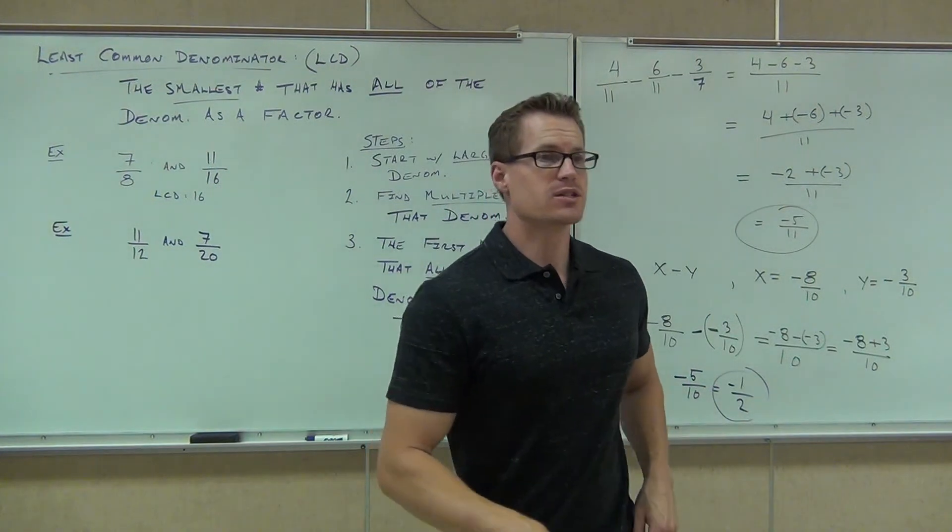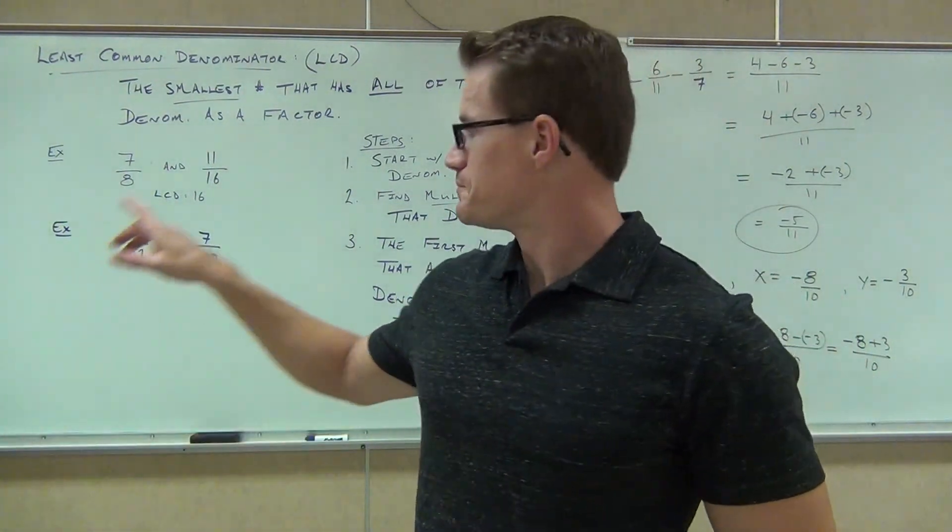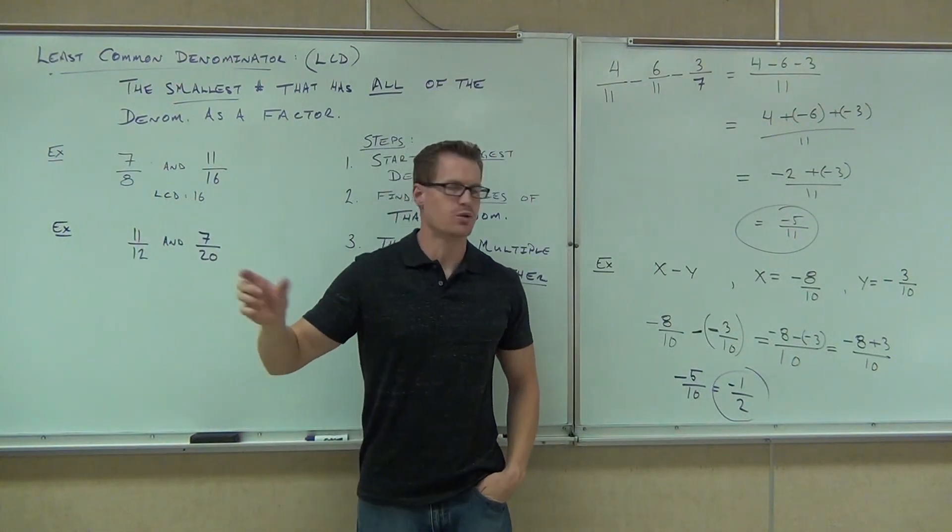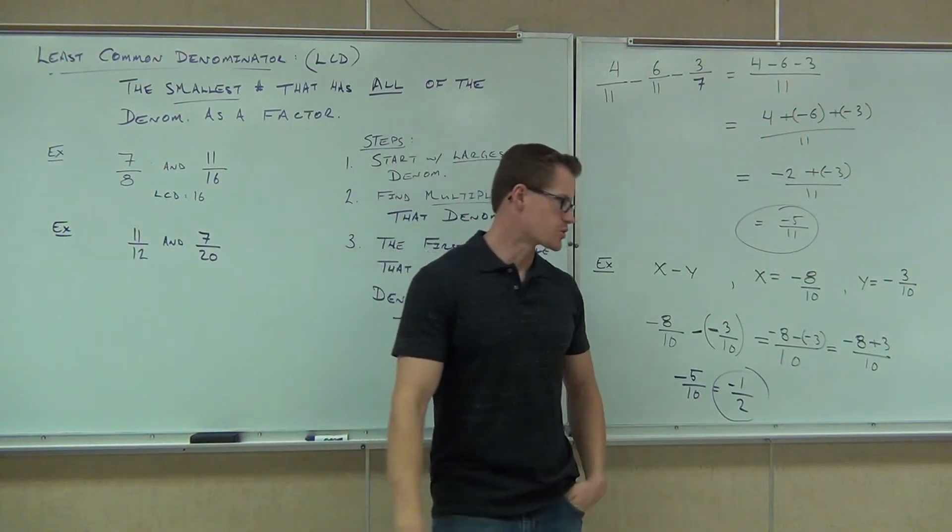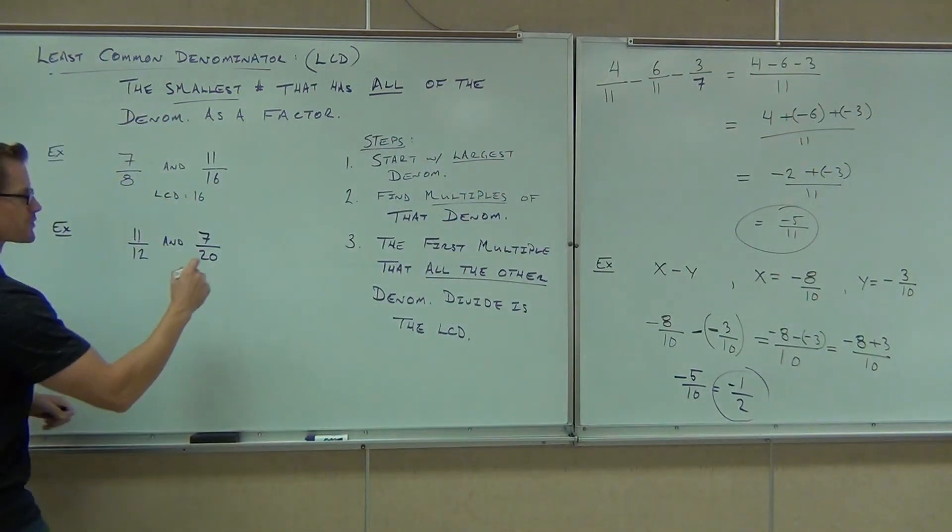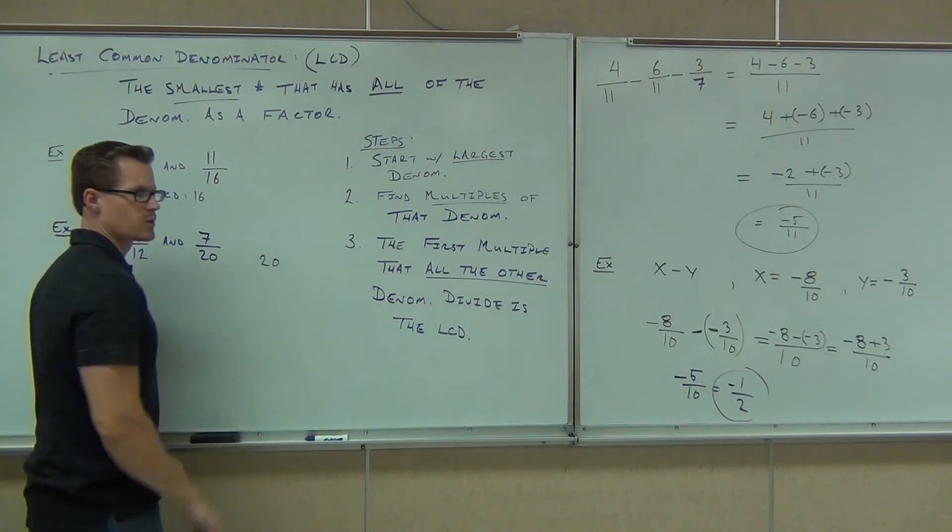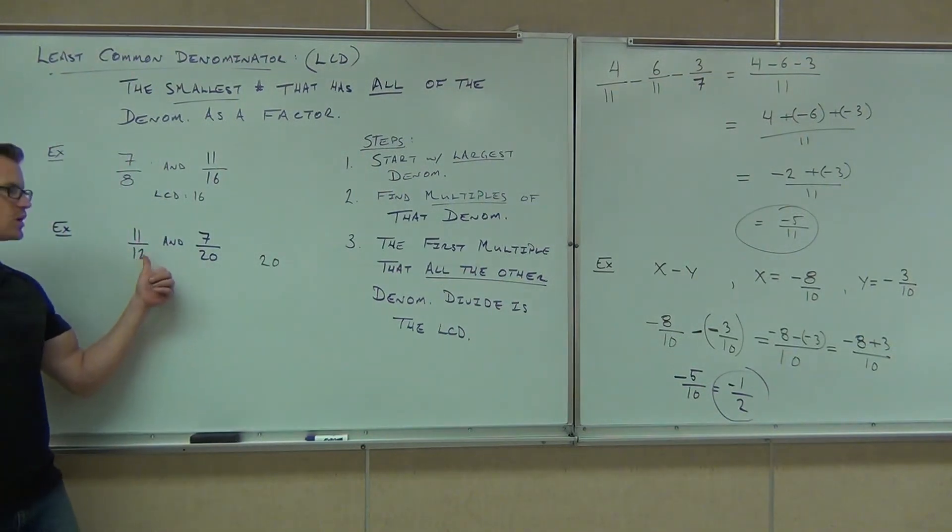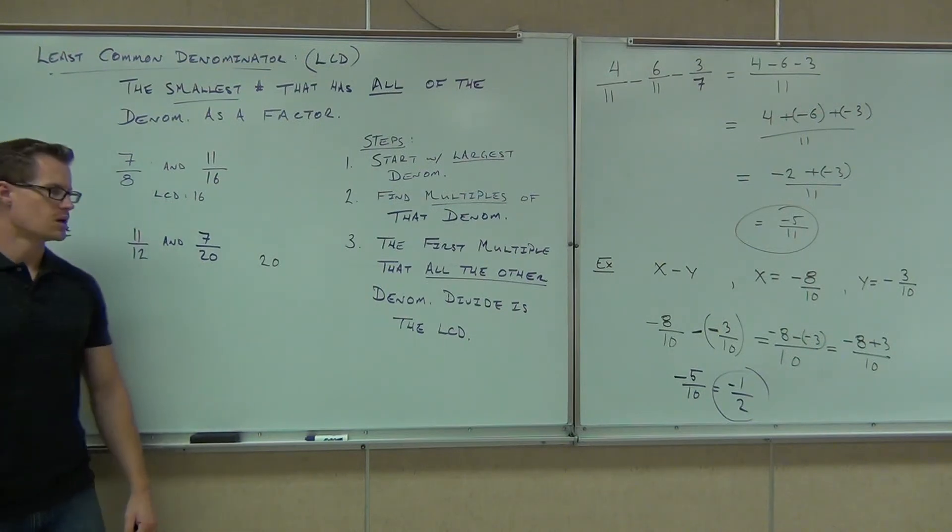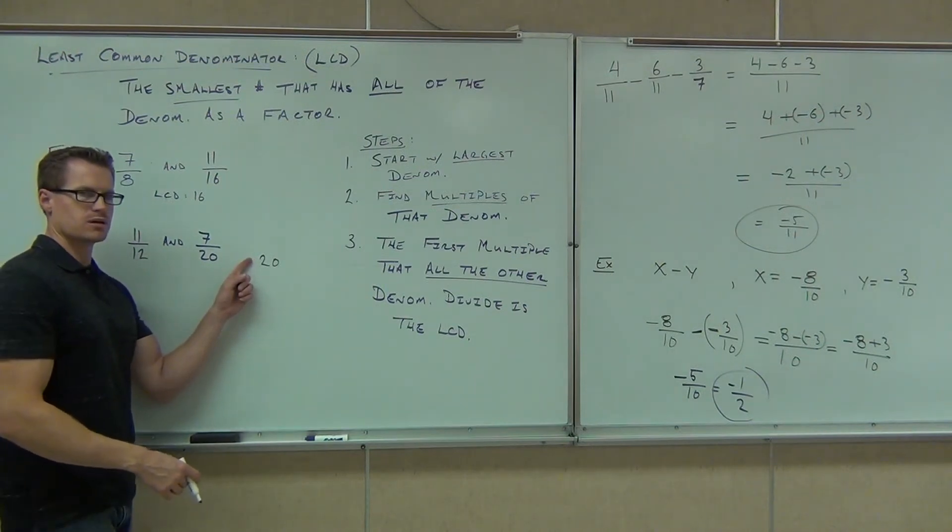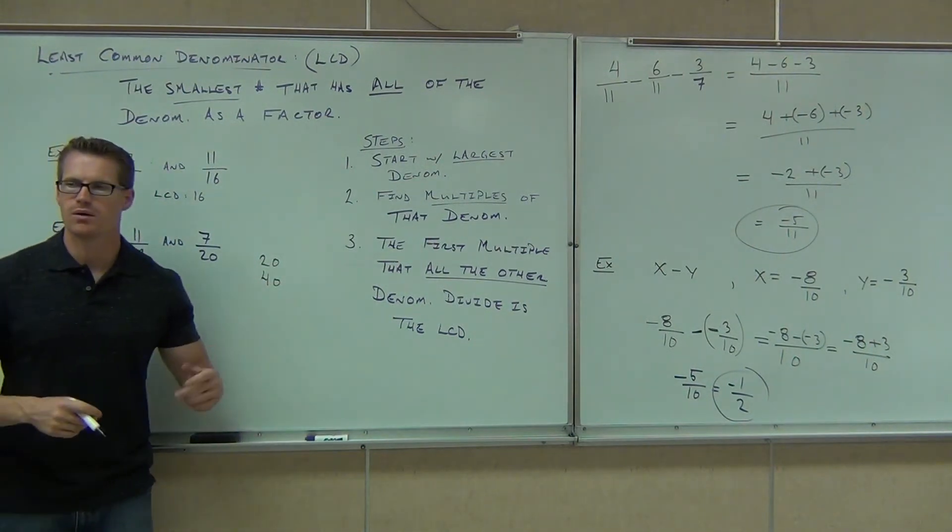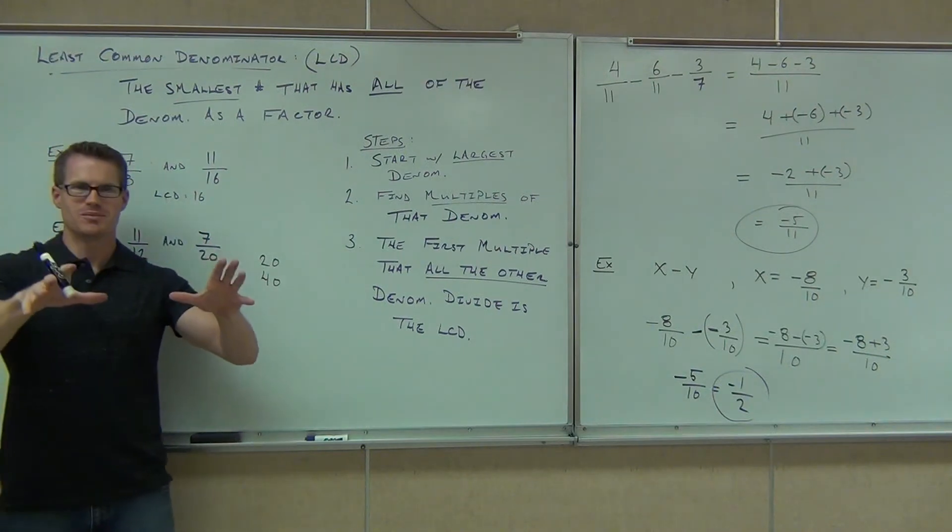Okay. We're going to find our LCD. So the first thing we're going to do, locate your largest denominator. Notice how the numerator really doesn't play a part in this right now. We're just looking at the bottom of our fractions. What's the largest one? 20. So we're going to start finding multiples of 20. Here's the first one. The first multiple of 20 is 20. Does 12 go into 20? No. What's the next multiple of 20? 40. We're going to find out right now. Hold up. Just hold on.